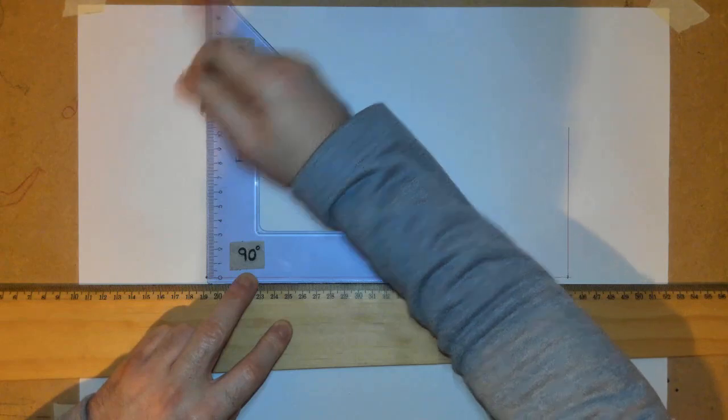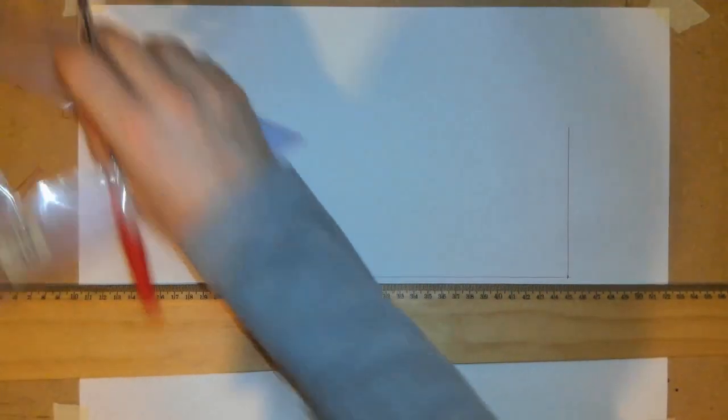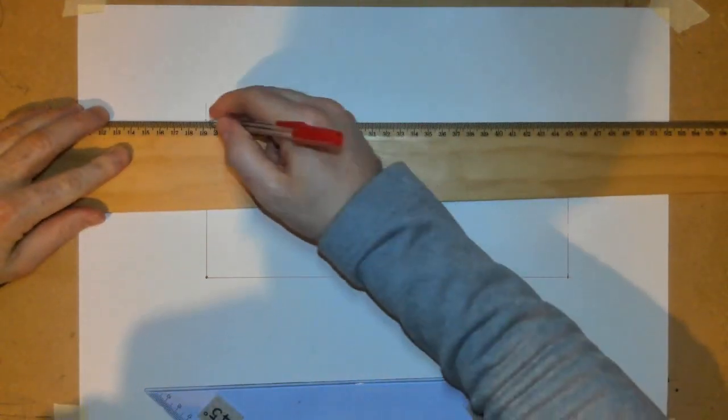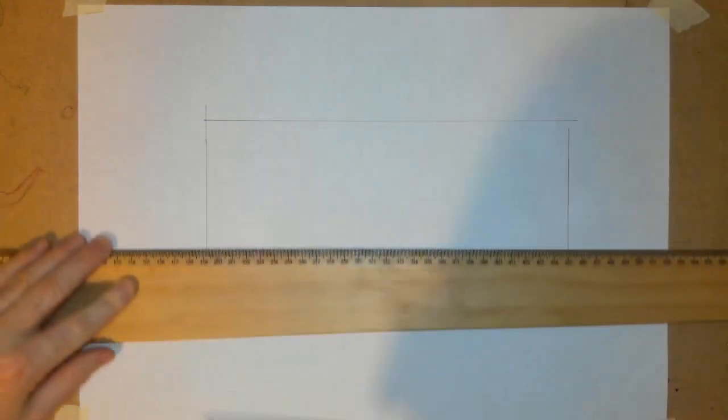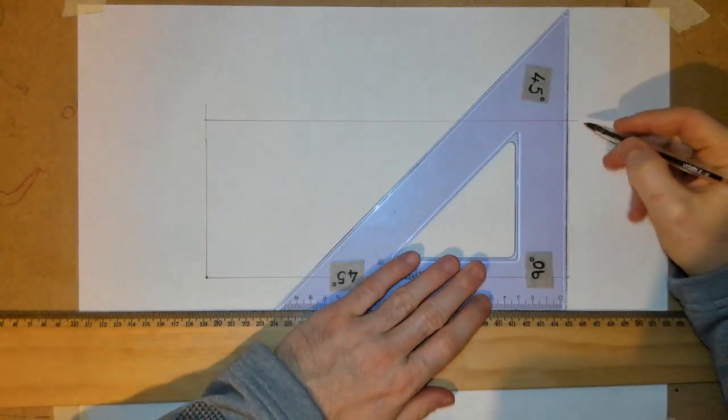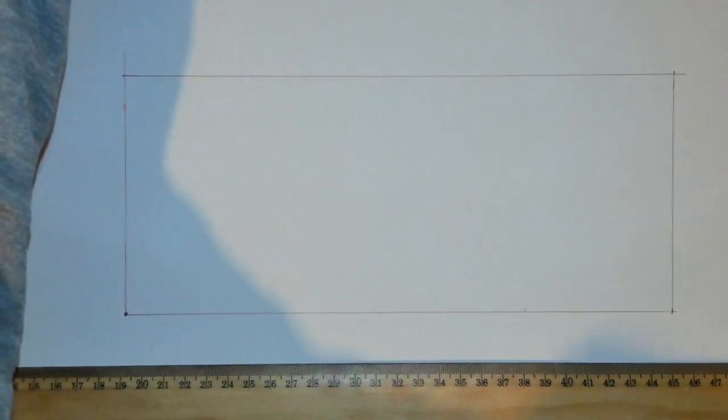After I've done that, project a horizontal line across, project a vertical line up. There we have it, there is the box completed. Just get that centered on the page there a little bit, there we have it.